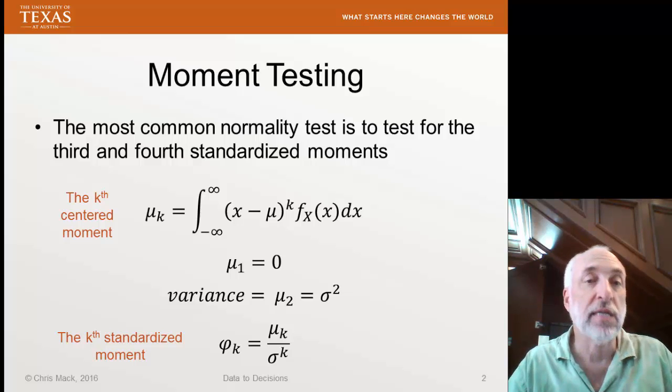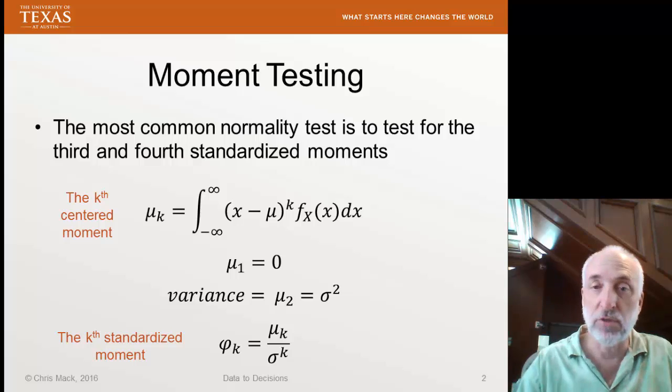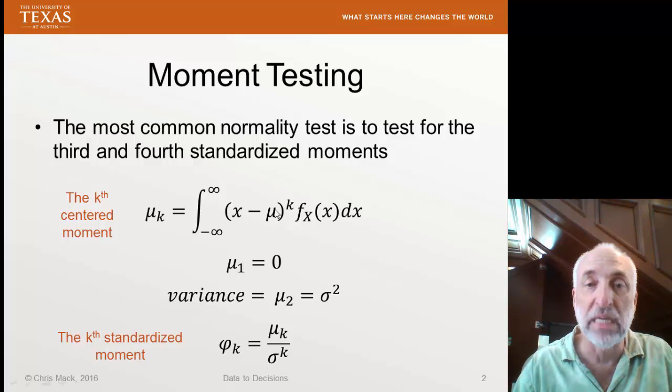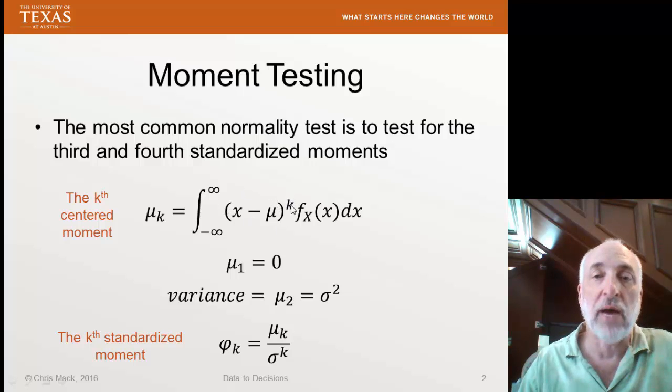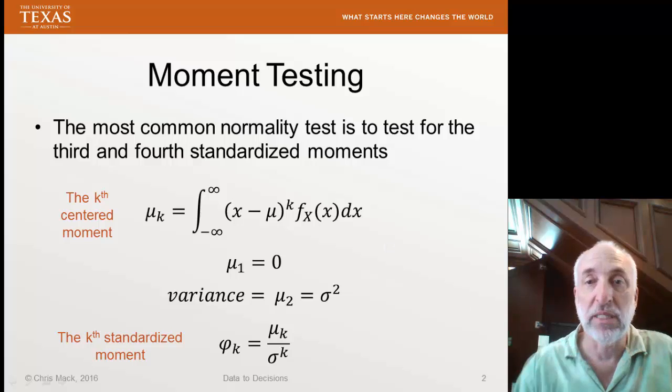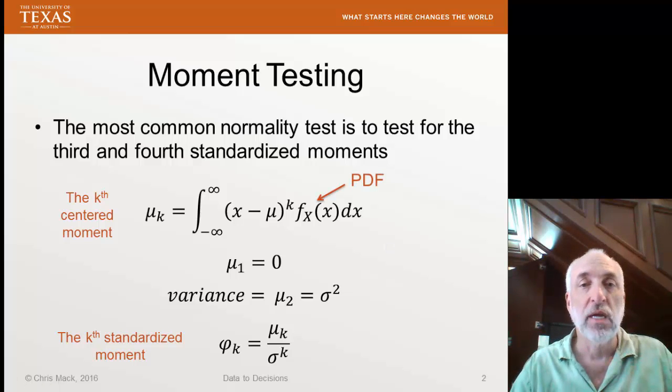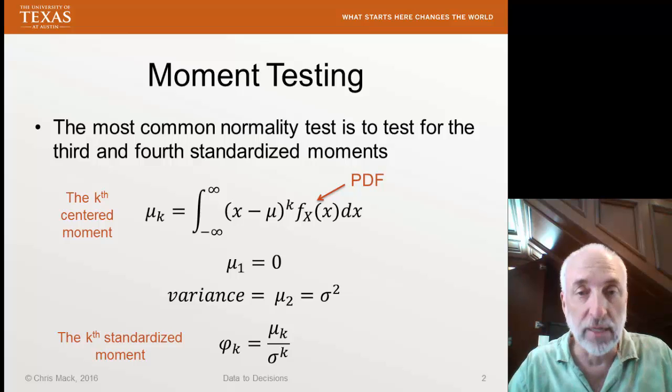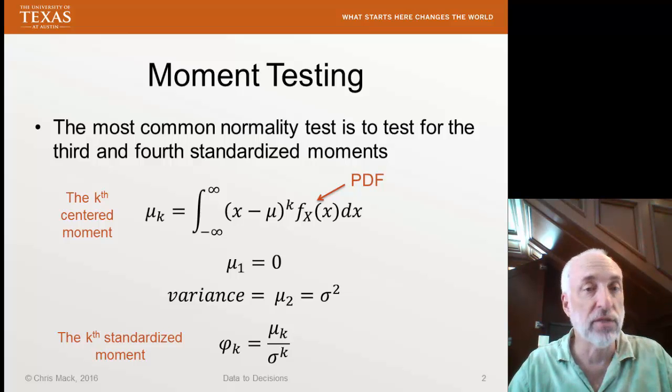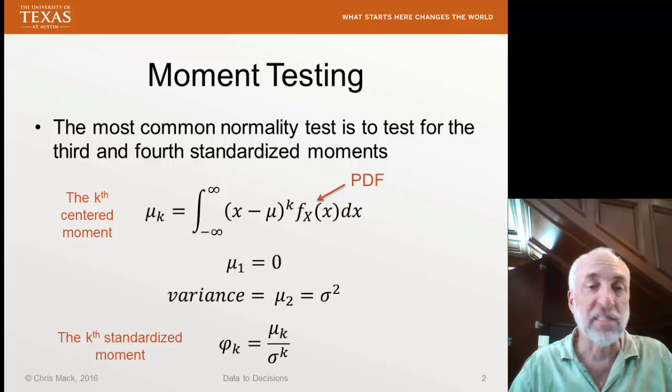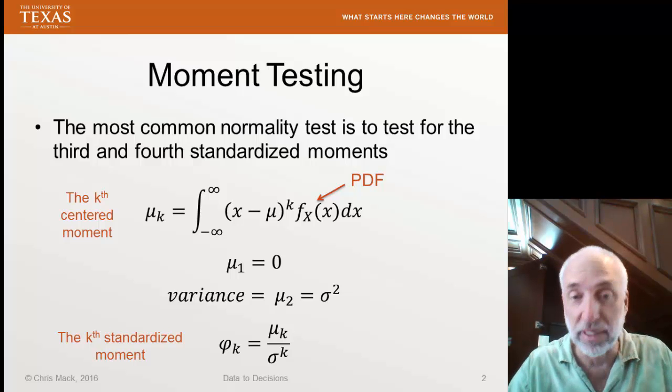As a review, the kth centered moment is given by this first equation where we take x, subtract off its mean value or expected value. This could be all the residuals where we take our model, subtract data, and subtract off the model data. So the residual to the kth power multiplied by the probability distribution function, integrate that over all values, and that becomes our kth centered moment. We then standardize that moment by dividing by our estimate of the standard deviation to the kth power.